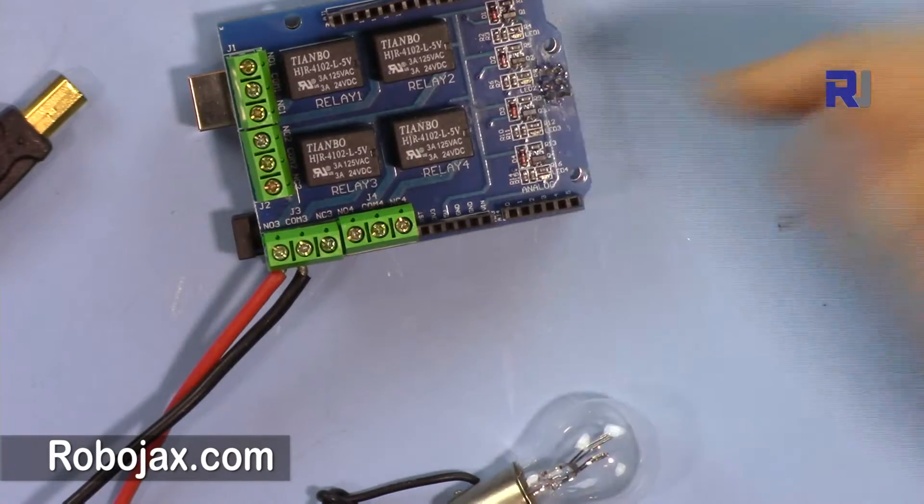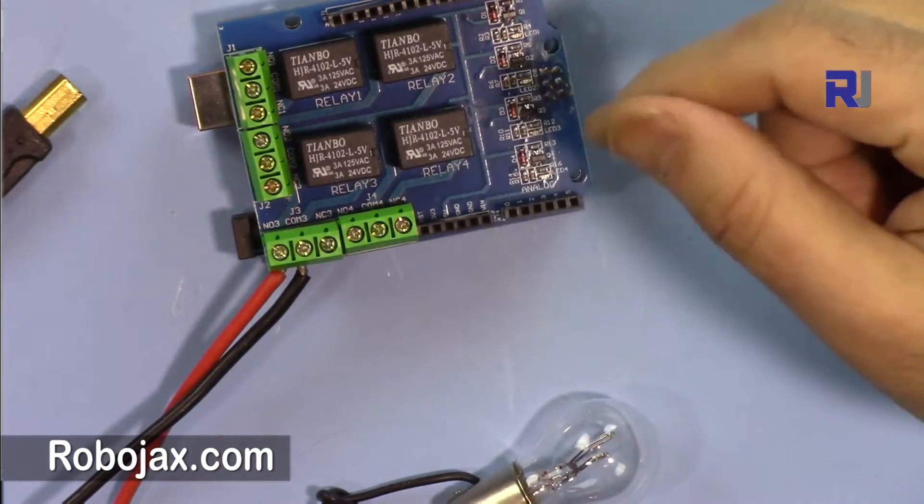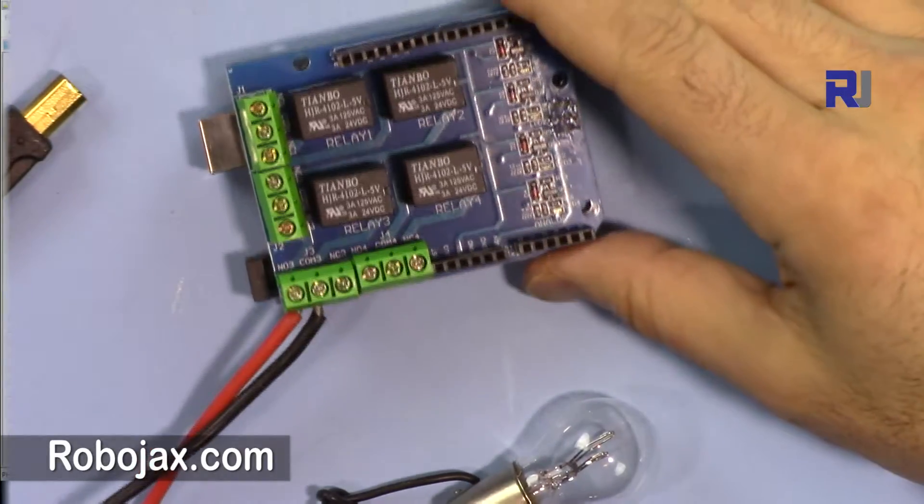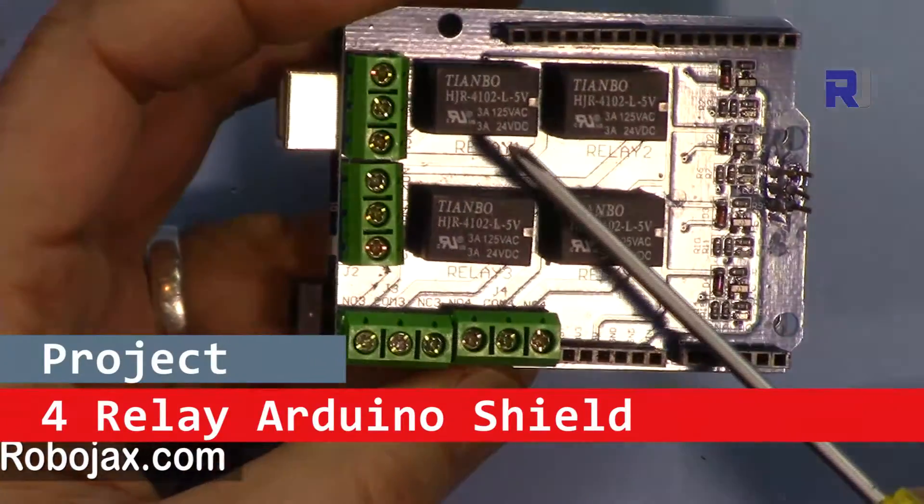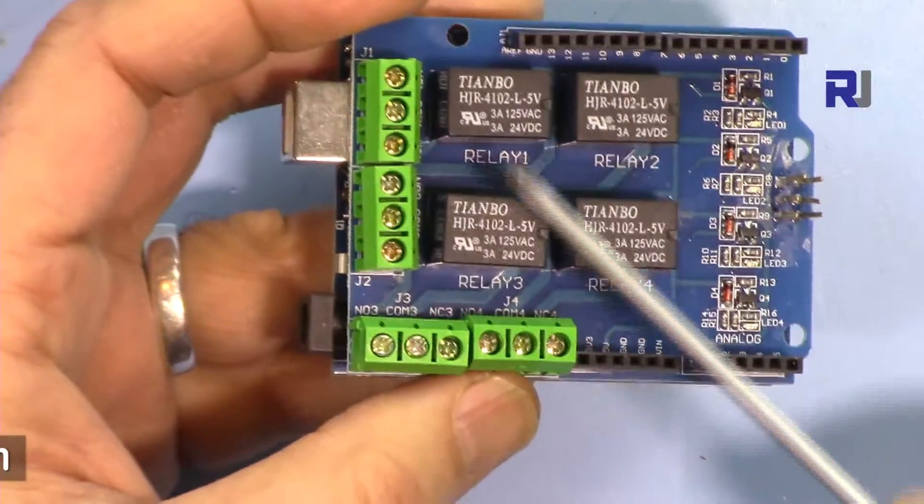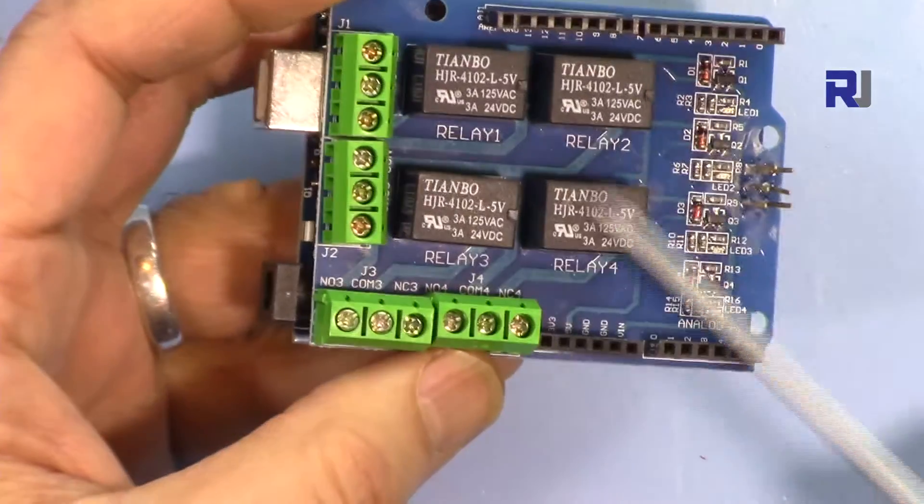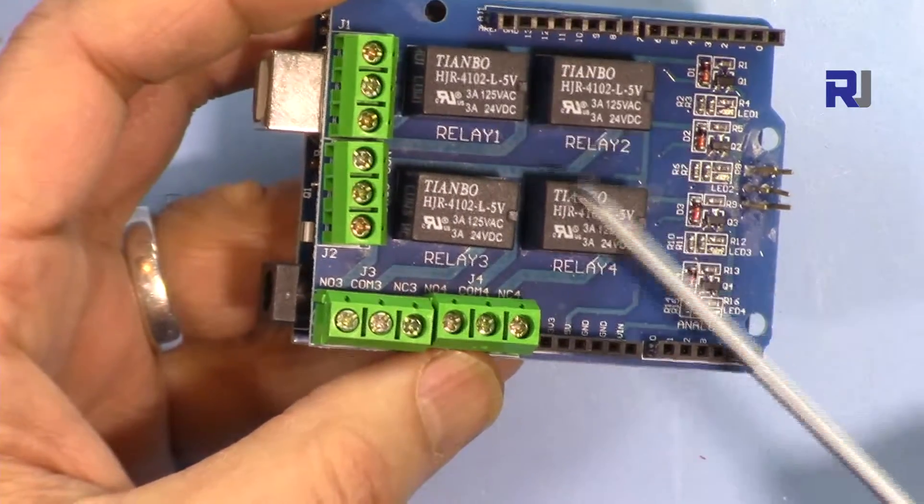You can get the code for this project by clicking the link in the description which will take you to robojax.com/learn/Arduino. For many applications, if you control up to four loads or different motors, lights, or anything that you want to control, this would be a very good option because you have four relays.